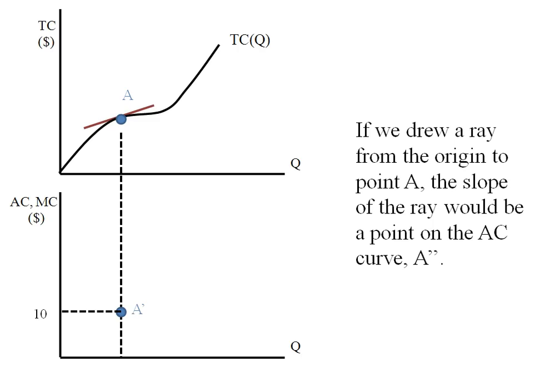If I start at the origin and draw a ray to point A, the slope of that ray is going to be a point on the average cost curve, which we'll call A'. Let's suppose this line has a slope of 30. It's steeper than our initial one, so I take it down to my bottom grid, plot 30, and that's A'.